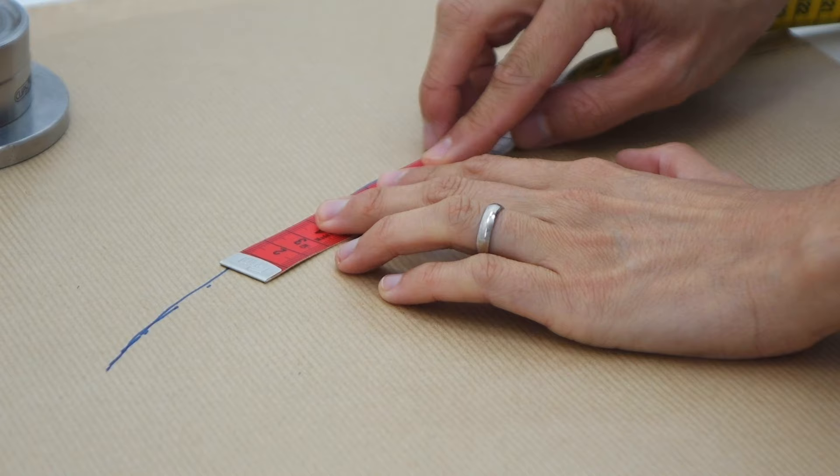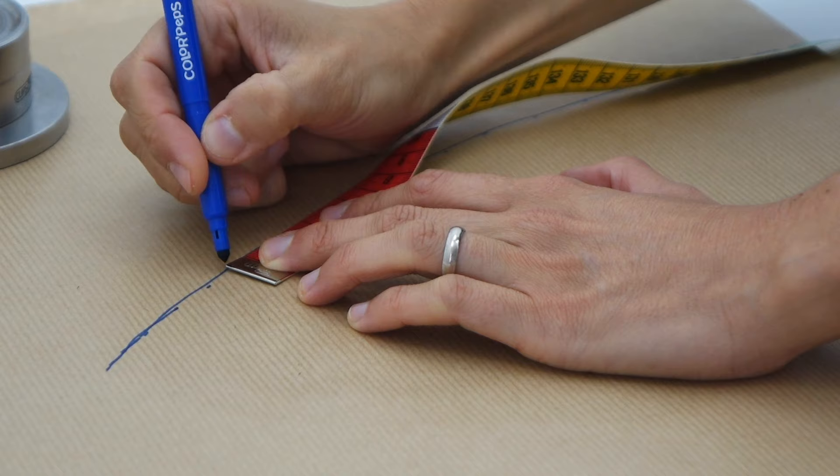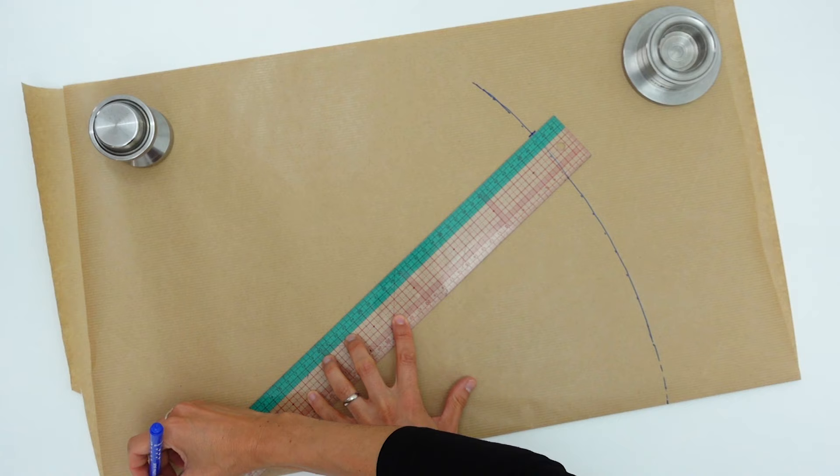So I place my tape at 27 and from there I am going to measure my curve. When I reach 0, I place a little mark. Then, with my Japanese ruler, I will connect it to the tip of the hat.